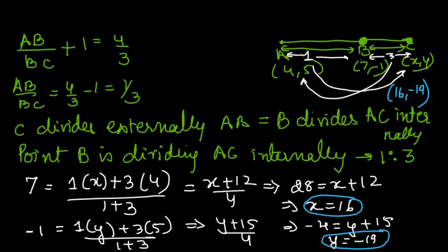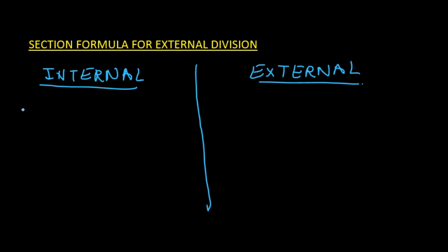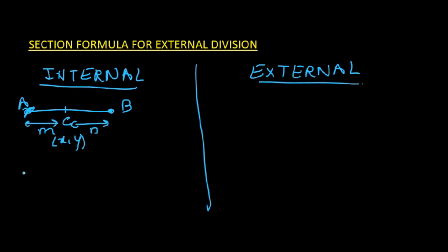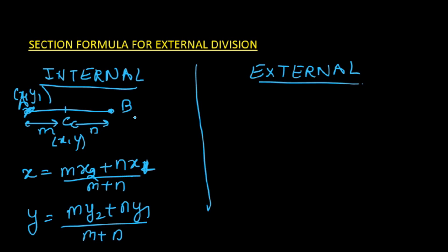There is also a direct formula for external division. For internal division, if a point divides in ratio m:n, the coordinates are (mx₂ + nx₁)/(m+n) and (my₂ + ny₁)/(m+n), where A is (x₁, y₁) and B is (x₂, y₂).